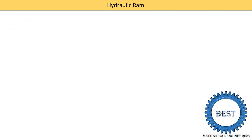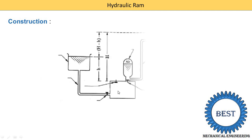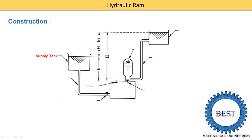Next, we study the construction of the hydraulic ram. For that, we refer to the figure of the hydraulic ram. This is the figure of the hydraulic ram and it has different components. This is the supply tank from where water is to be supplied. From the supply tank, water goes into the supply pipe.